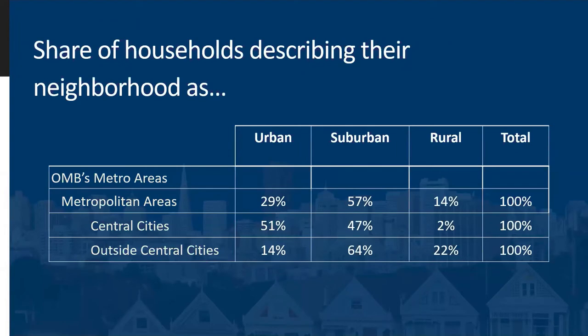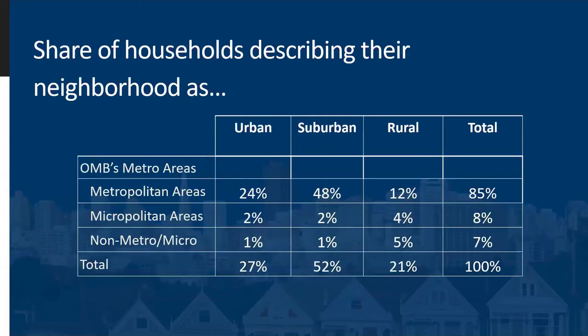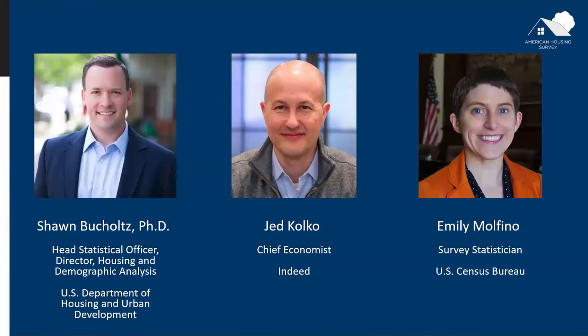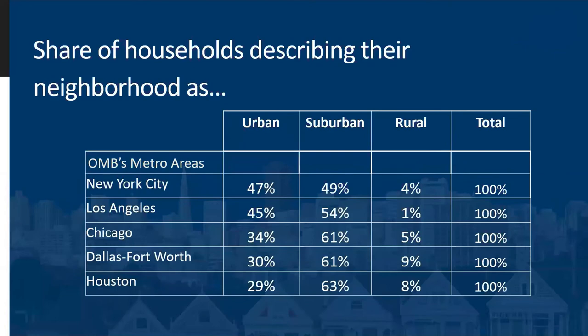That was a conclusion I reached as well. Another table from our series shows the share of households describing their neighborhood as urban, suburban, or rural for each of the five largest metropolitan areas in the U.S.: New York City, Los Angeles, Chicago, Dallas-Fort Worth, and Houston. Jed, what jumps out at you in this table?